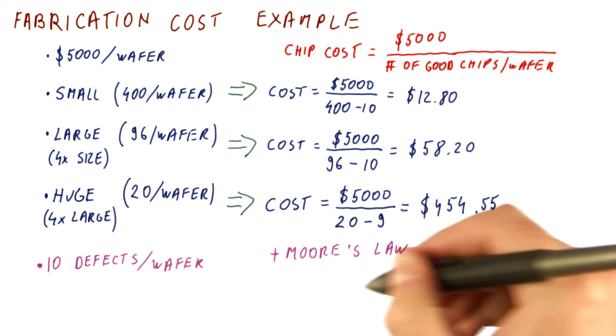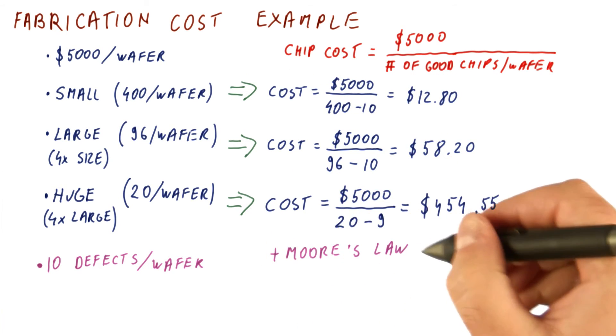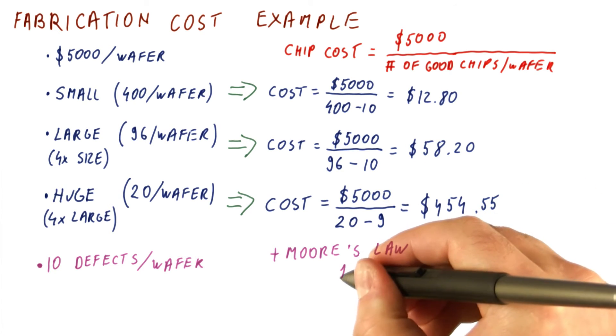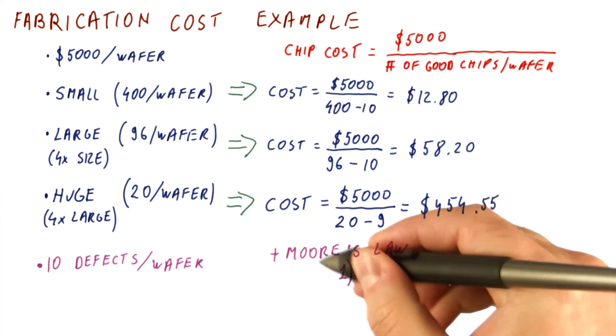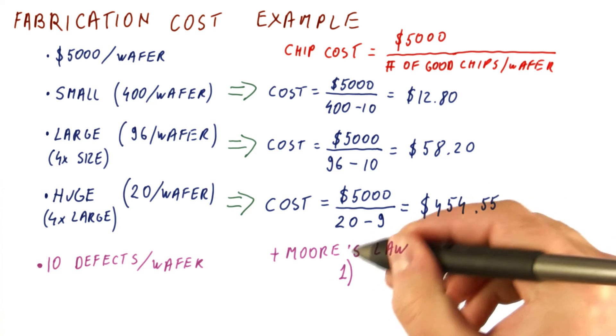So if this is what manufacturing costs look like, and if we combine this with what Moore's law gives us, which is we can fit more stuff on the same chip, we really have two choices when we get a generation of Moore's law to play for us.